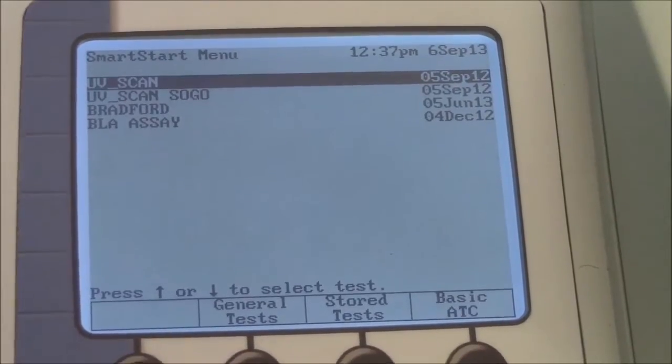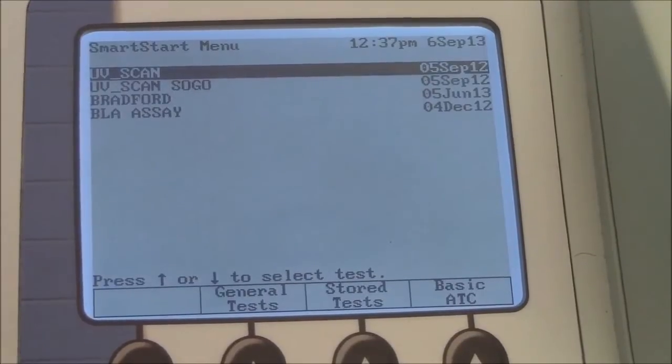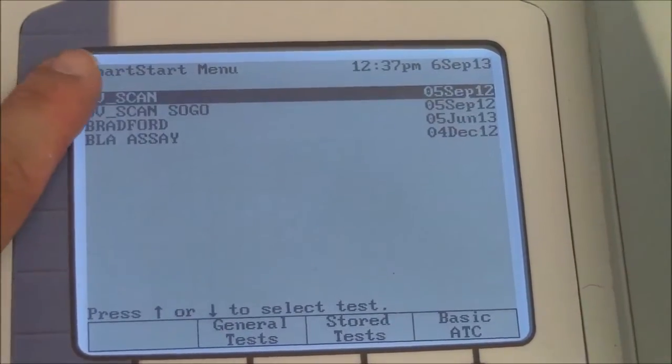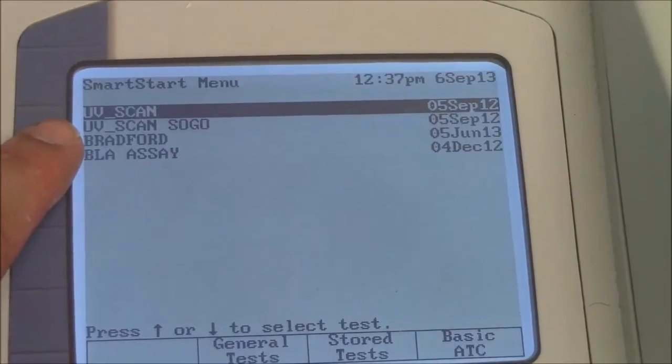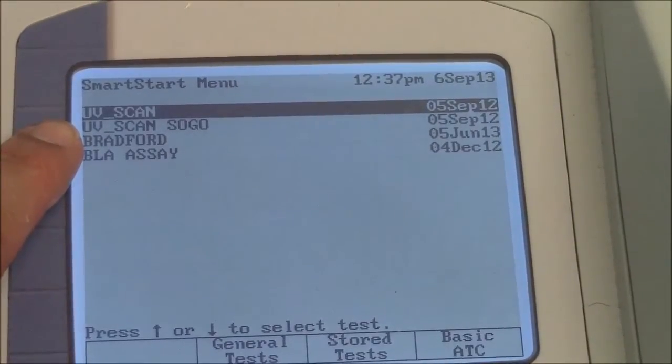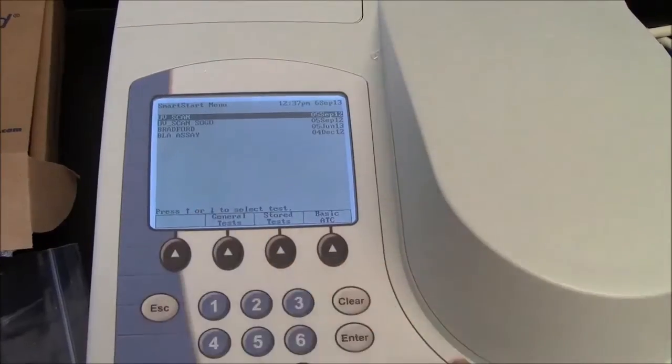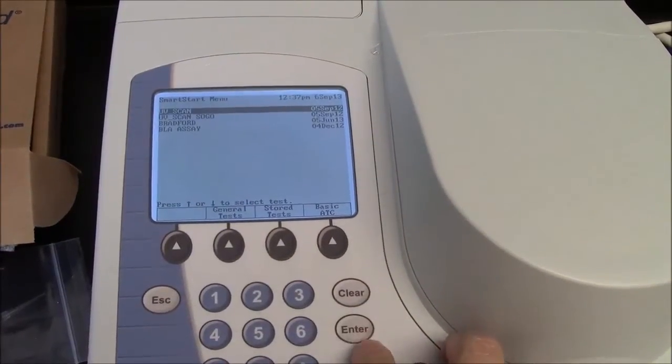After going through some initialization procedures, this is called the Smart Start Menu. And in this case, we want to do a UV scan. So when the appropriate choice is highlighted, I will press this Enter button.